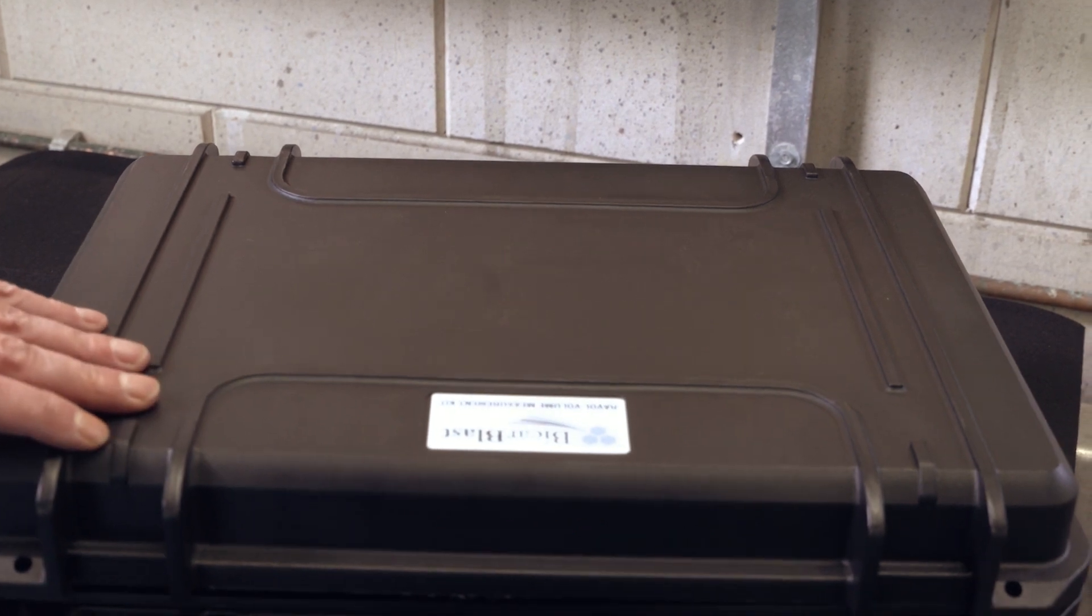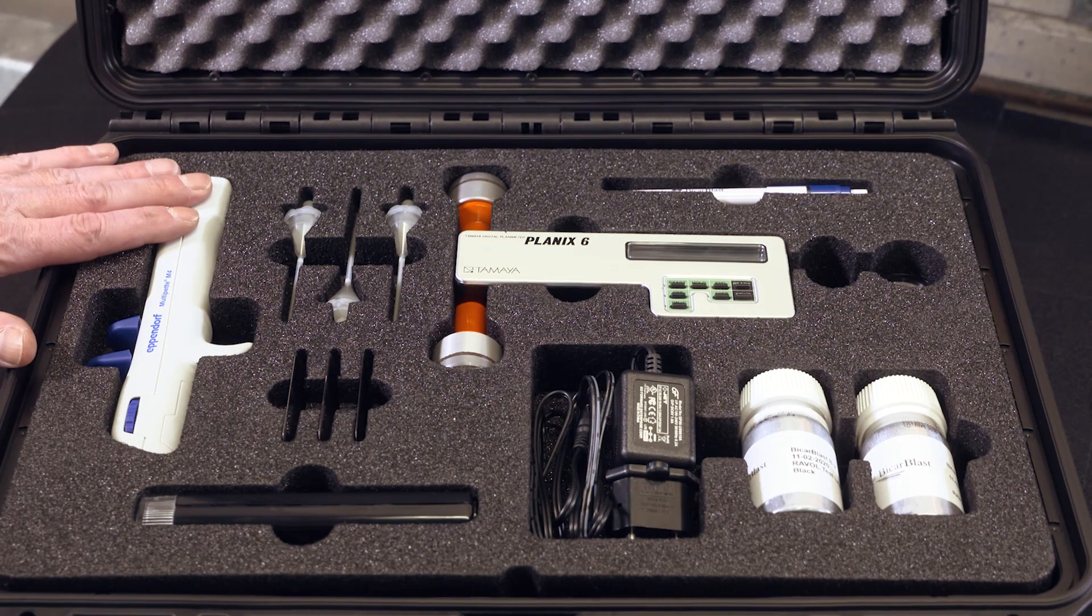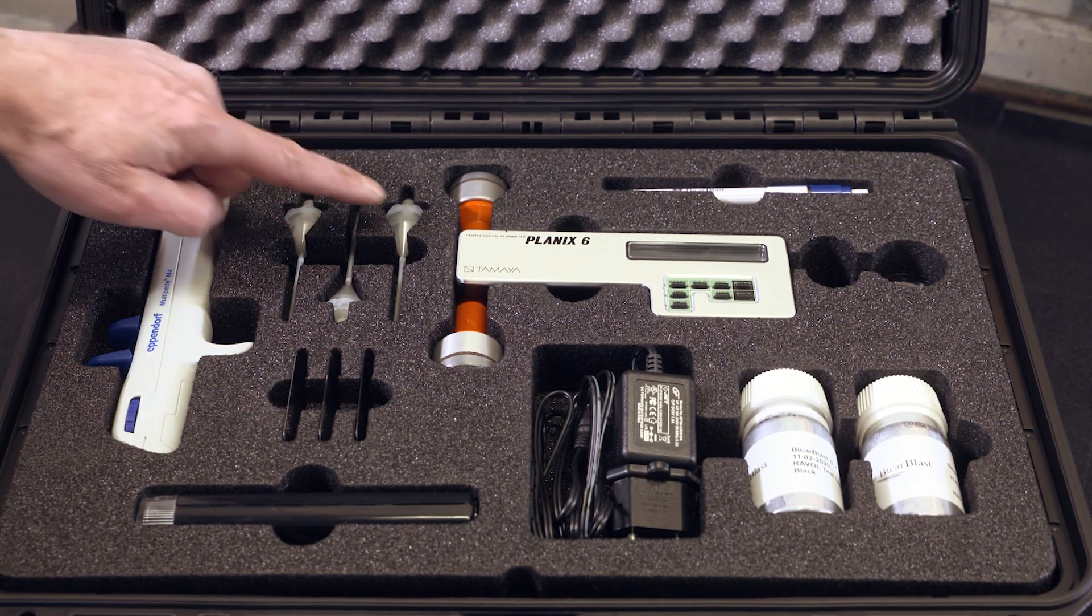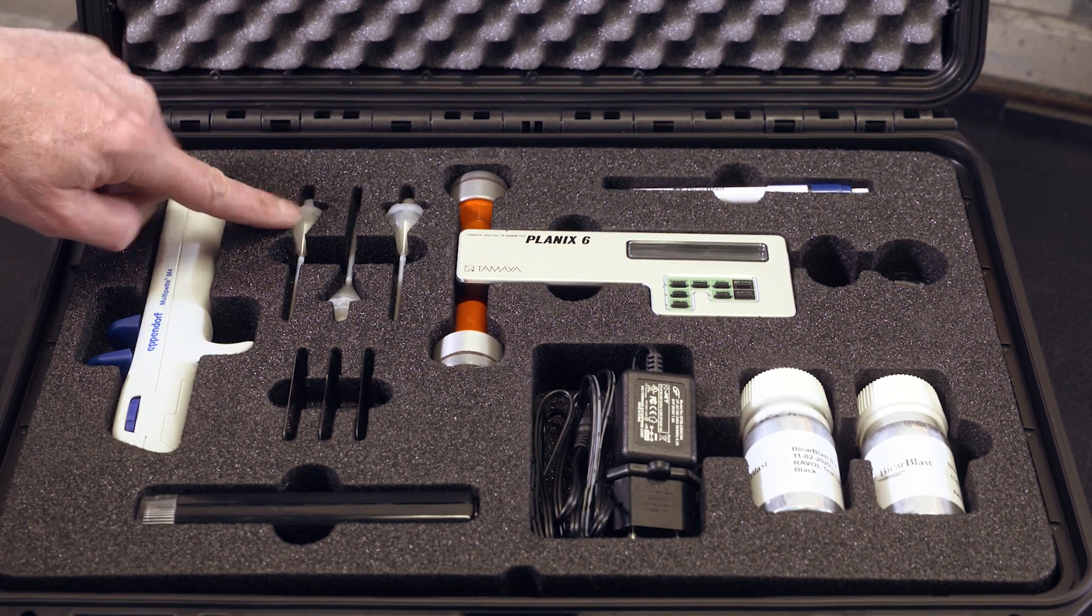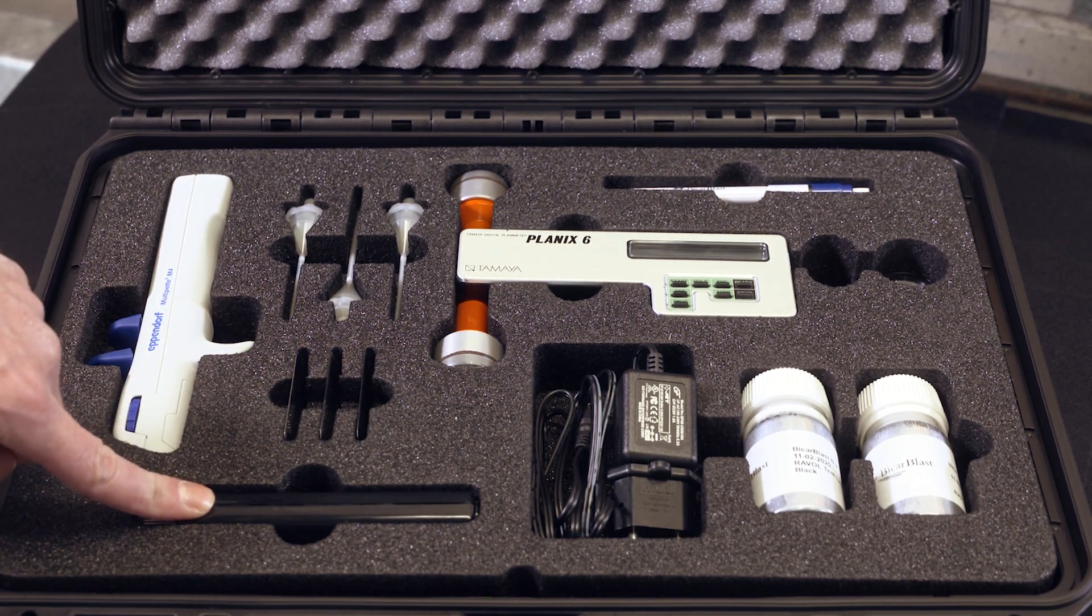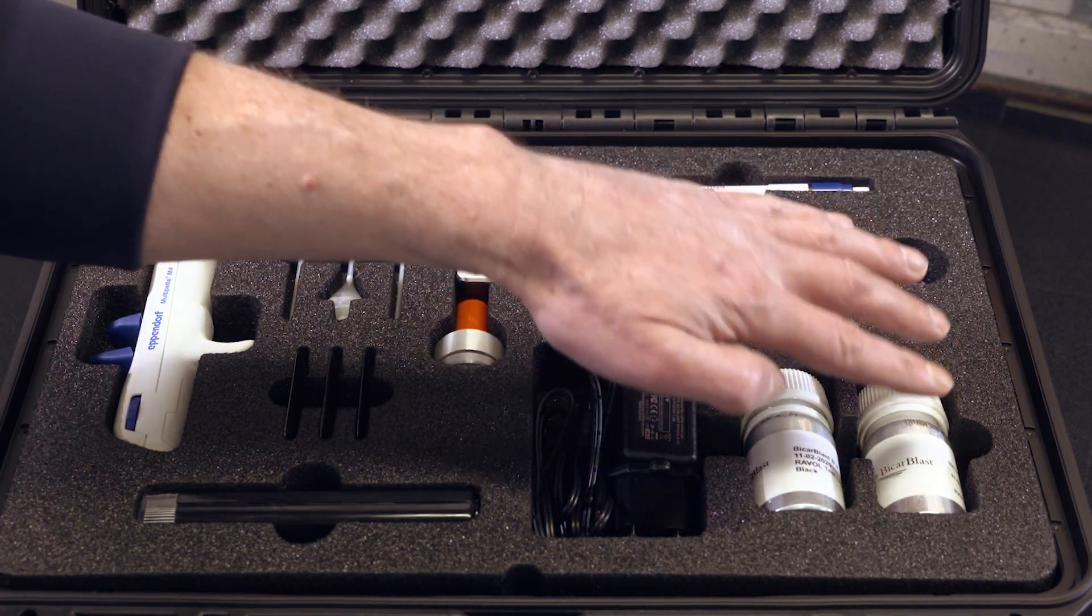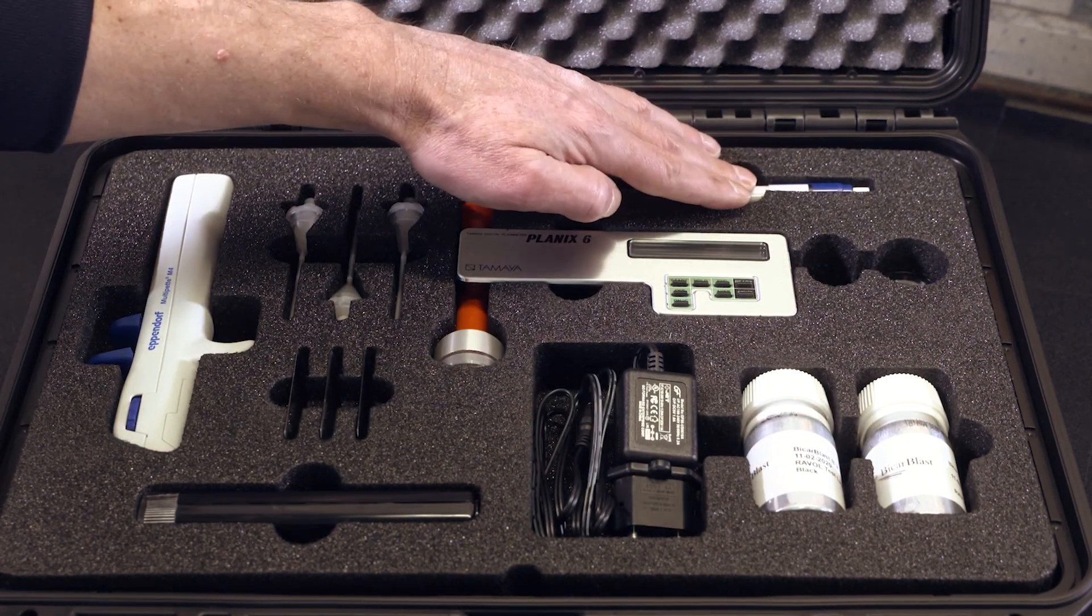Welcome to this product video for Ravel Volume Measurement Kit with Digital Planimeter. In this kit we have a digital pipette, three tips, three doctor blades, a microscope with a hundred times magnification capability, a bottle of testing liquid, a bottle of cleaning liquid, a pen, a planimeter and a charger.